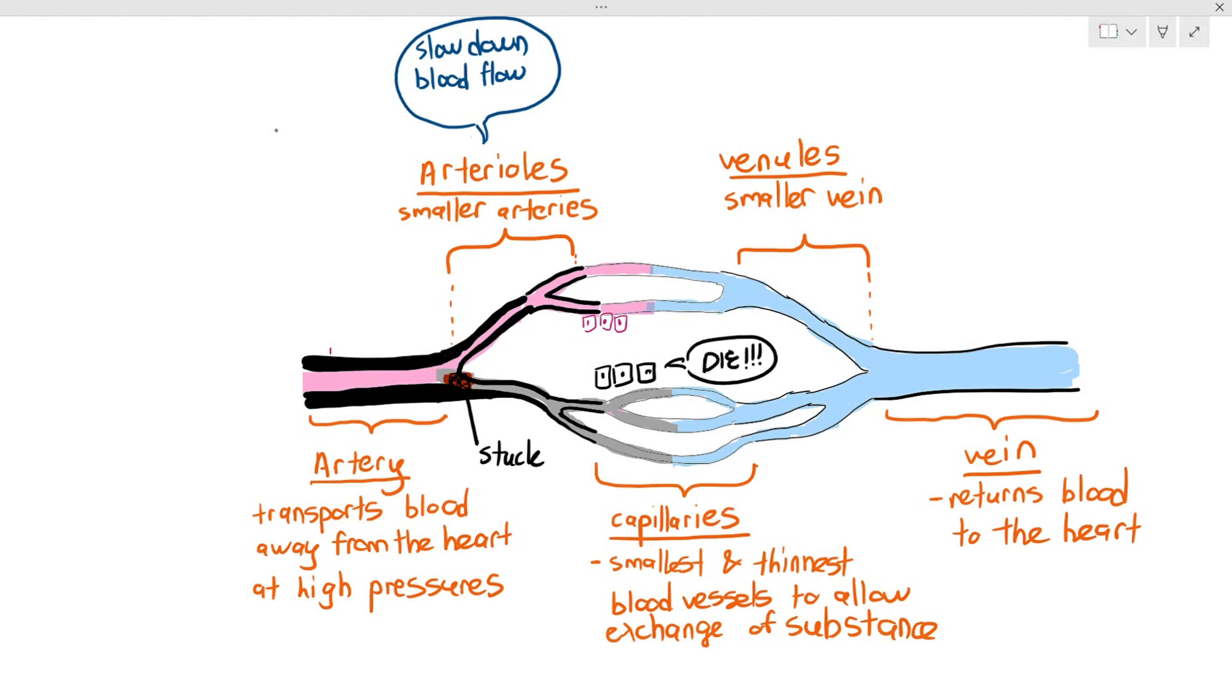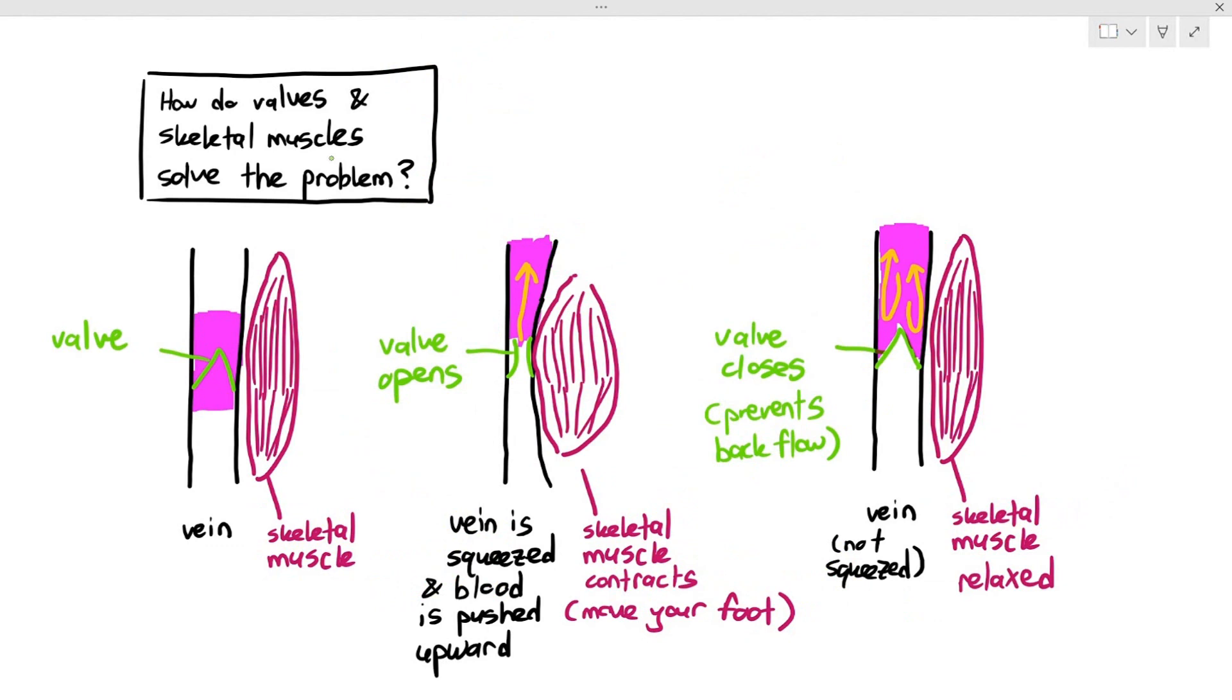So, blood clots can block blood vessels which will lead to body cells dying. And this can be quite a serious thing, especially if it happens in the heart, it may lead to a heart attack. And if it happens in the brain, it may lead to a stroke because the brain cells will die. That is why valves and the skeletal muscle contraction in the vein are extremely important because they ensure that the blood is constantly flowing in one direction and backflow does not happen.